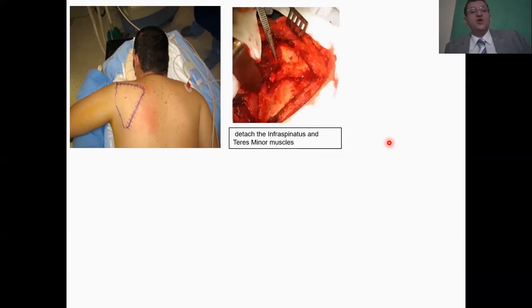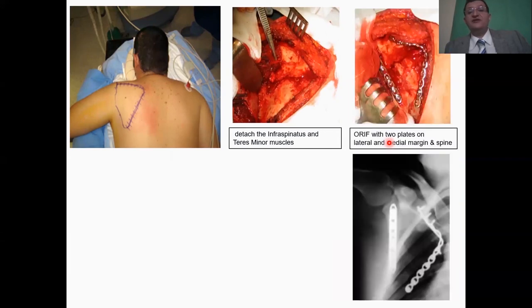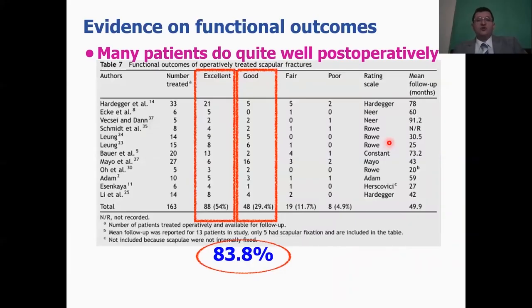And that's our situation here. We thought he was in a case for surgery. We put him in a prone position, use lateral as well, open this classical Judet approach, detach the infraspinatus, and dissected the teres minor and put two plates, one on the lateral border, one on the spine of the scapula and the medial border.